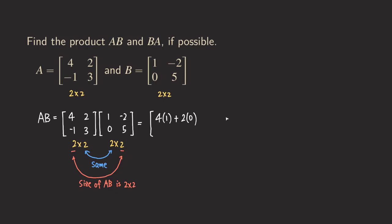For the entry in the first row and second column, we use the first row of A and the second column of B. So it would be 4 times negative 2 plus 2 times 5. That is our (1,2) entry. For the (2,1) entry — in the second row and first column — we use the second row of the first matrix and the first column of the second matrix: negative 1 times 1 plus 3 times 0.